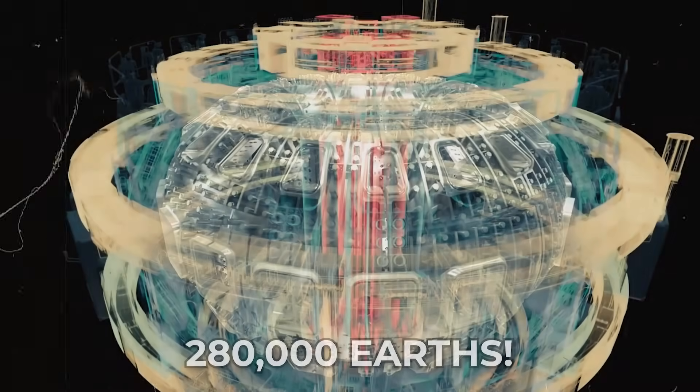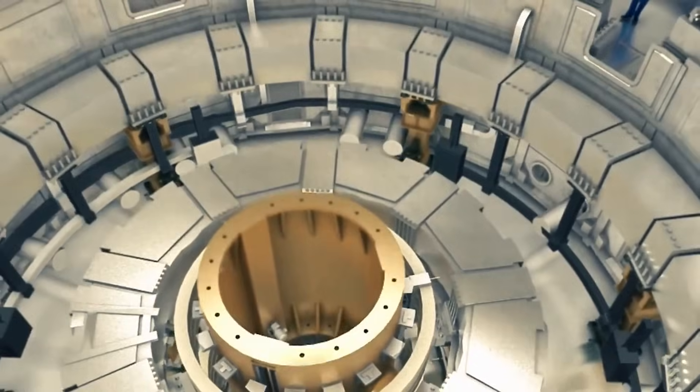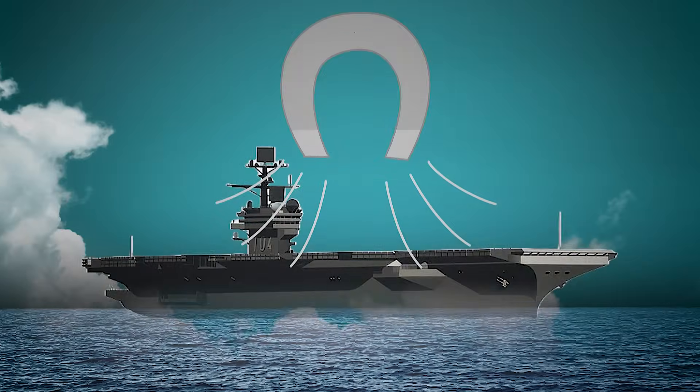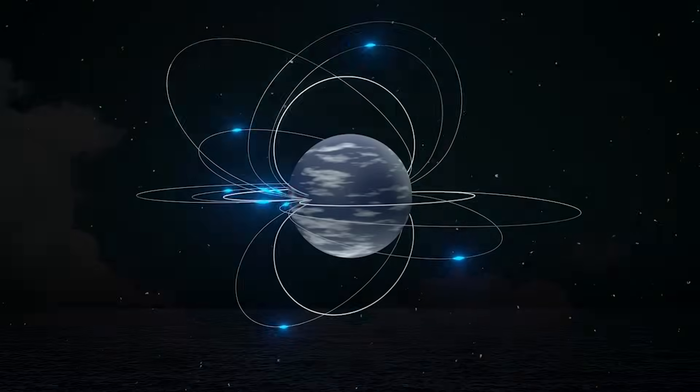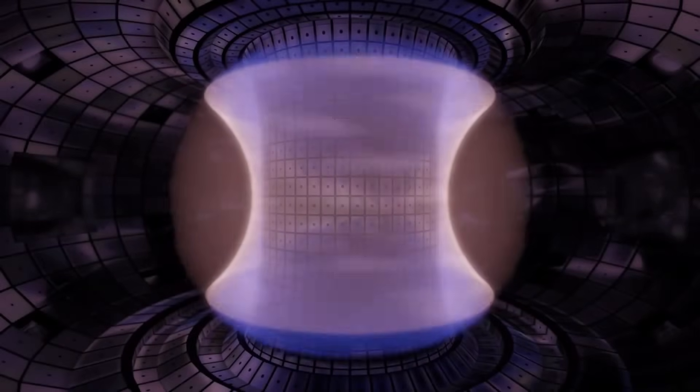This machine is stronger than 280,000 Earths. Hard to imagine, right? Yet scientists have built a magnet so powerful it could lift an aircraft carrier straight out of the ocean. It generates a magnetic field of 13 tesla, an intensity that redefines the limits of engineering.